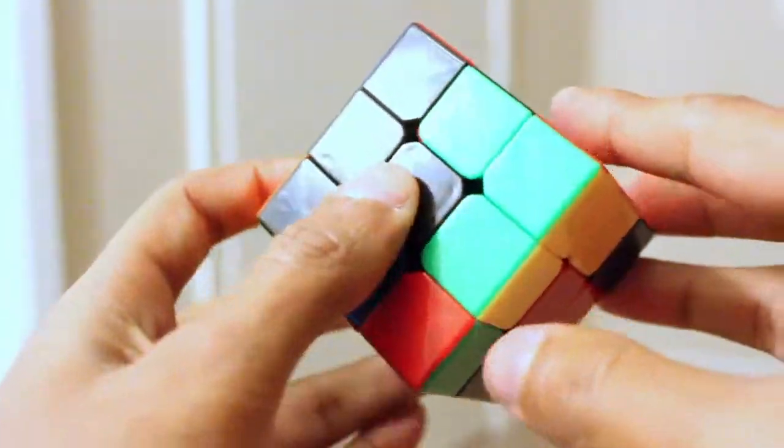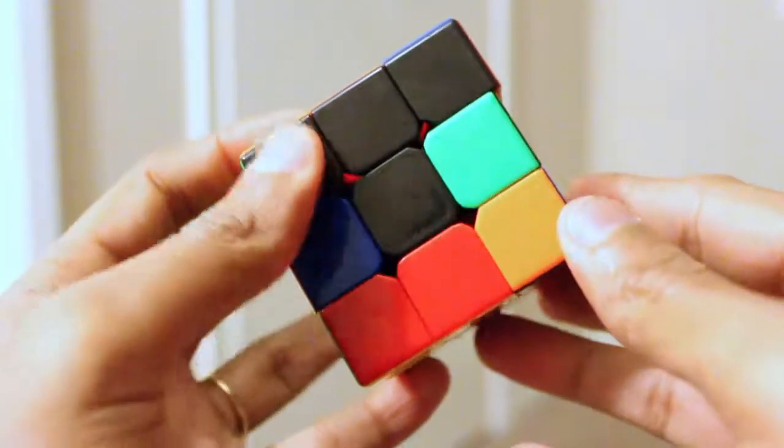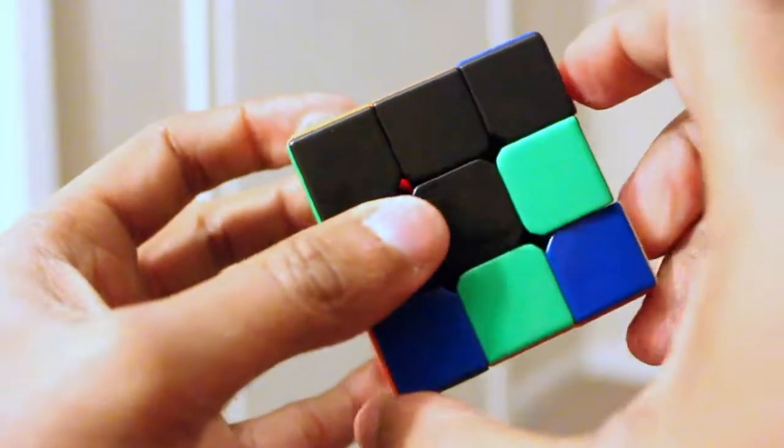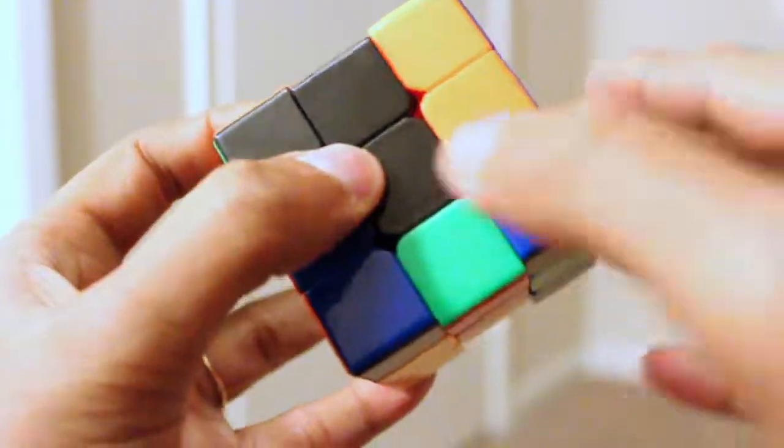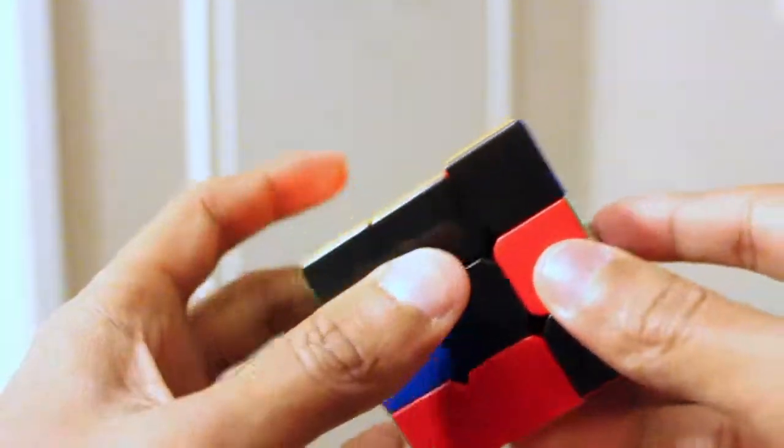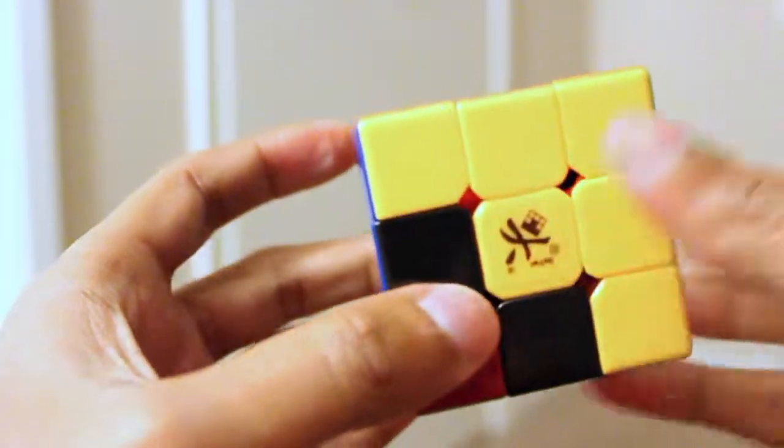The final corner: orange, black, blue. Okay, here it is. Move it away, bring this down, bring it back, and bring this up. That's it - we solved the top layer.